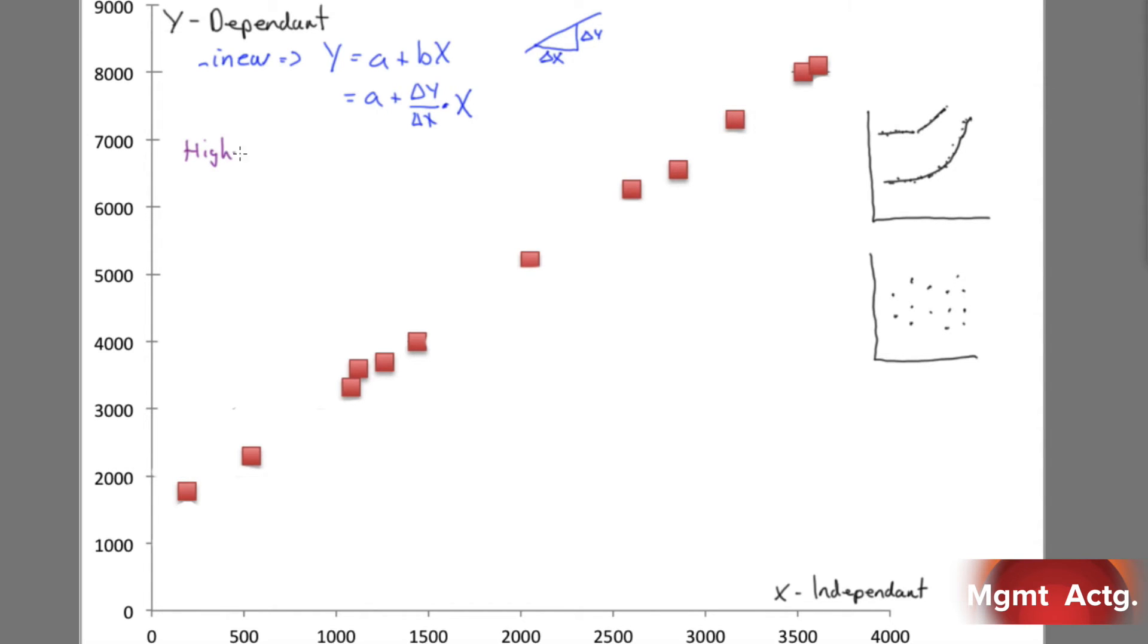Right, so let's look at the high-low method and see what we get here. We'll write it out: the high-low method. And the high-low method again works if we have a linear relationship. What we do is we find the highest level and the lowest level of activity. In other words, we're not concerned with y, we're concerned with down here. So we want to find the point that has the lowest level of x and the point that has the highest level of x.